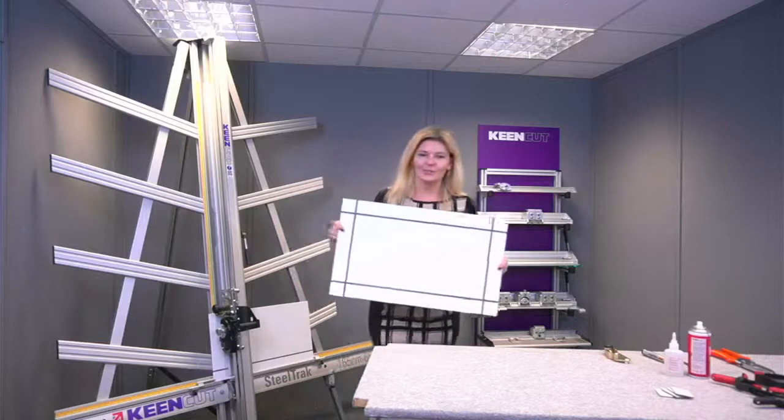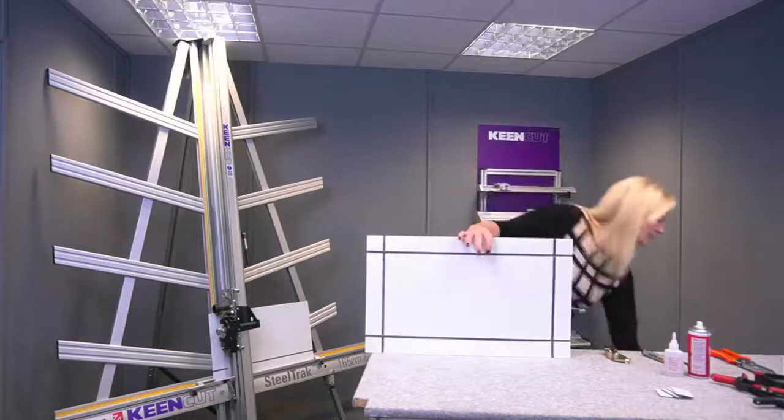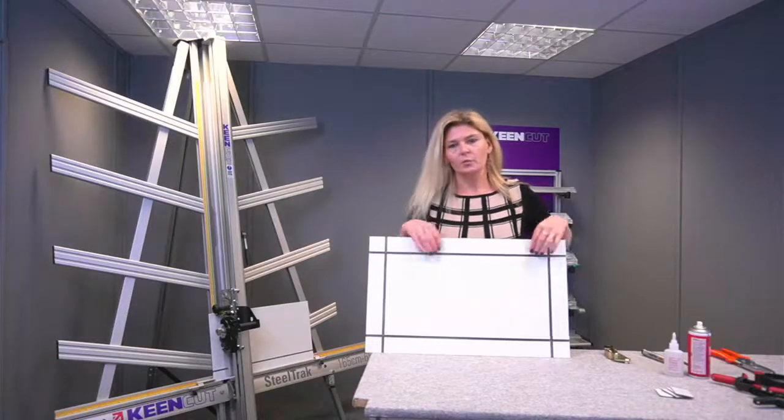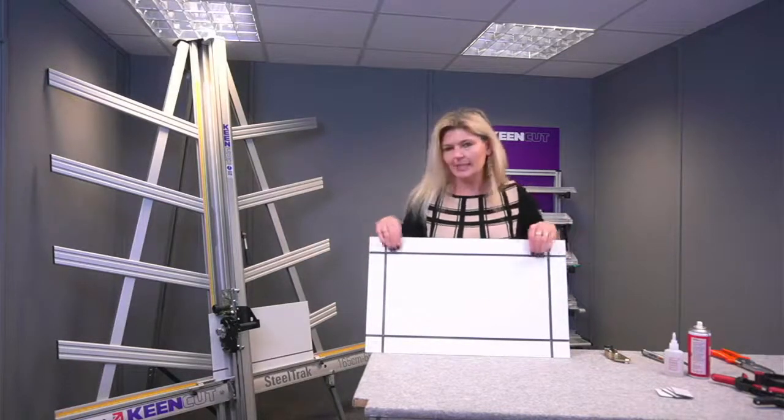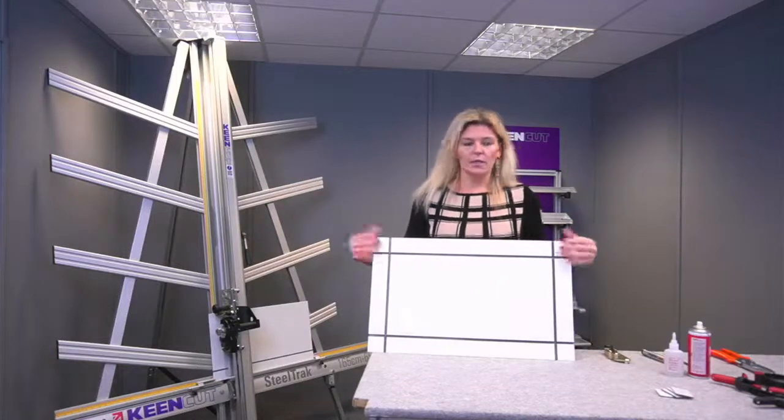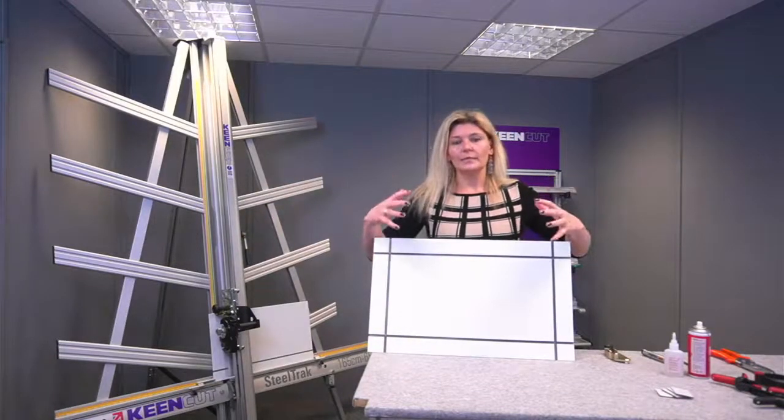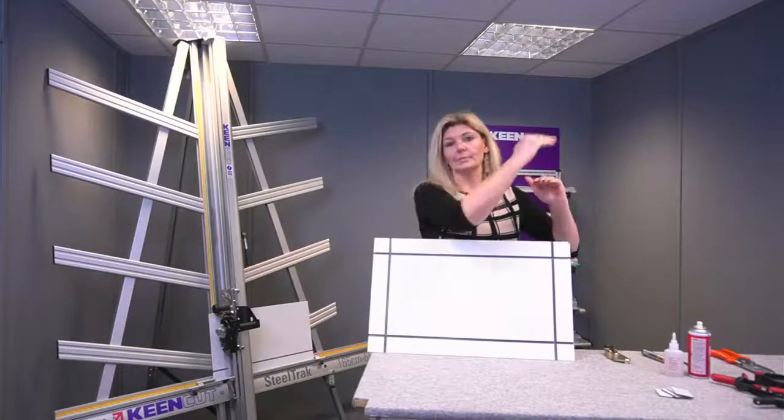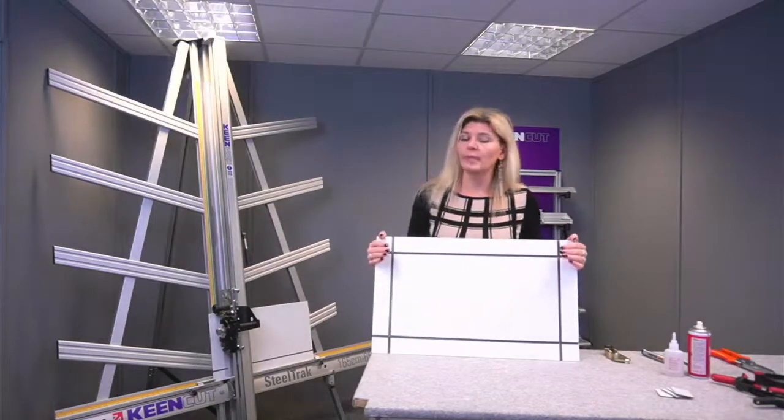So as you can see we have the V-grooving edges all the way around the board. Now what I need to do is I need to cut out the corners. I need to mark them first. What I'm going to be doing is cutting out the corners on the length of the board because when it's all folded together the joins will be at the top and at the bottom once it's mounted onto the wall so you won't be able to see the joins.